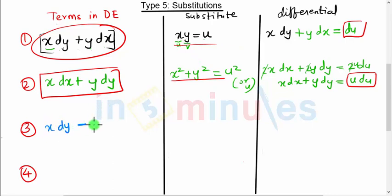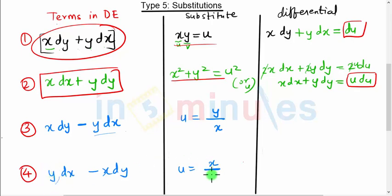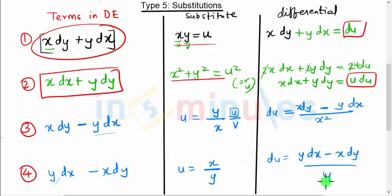The third and fourth substitutions: if you have x dy minus y dx, substitute y divided by x equal to u. If you have y dx minus x dy, substitute x divided by y equal to u. Taking the derivative using the quotient rule (u/v rule): du equals (x dy minus y dx) divided by x squared, or oppositely (y dx minus x dy) divided by y squared.